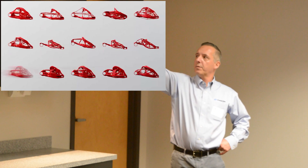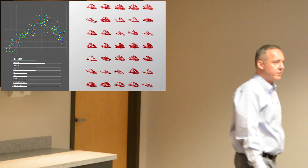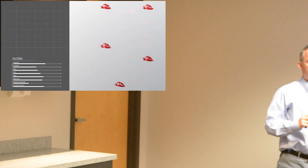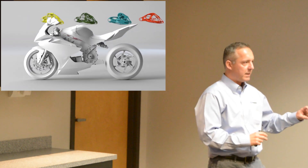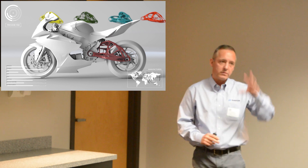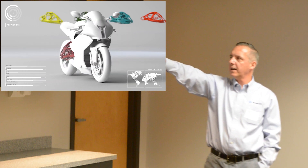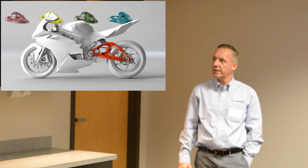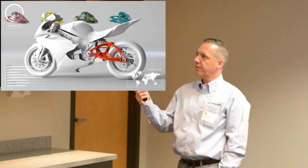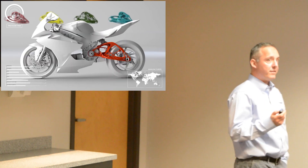There are all the design options it could produce. Then you filter them down, just like filtering an Amazon search. Maybe you say, I only want a part that's three cubic inches — it filters down. Then you specify aluminum — it filters further. You end up with several different designs and can see which one has the best solution. These are the kinds of things from a design standpoint that are going to change the way we manufacture things.